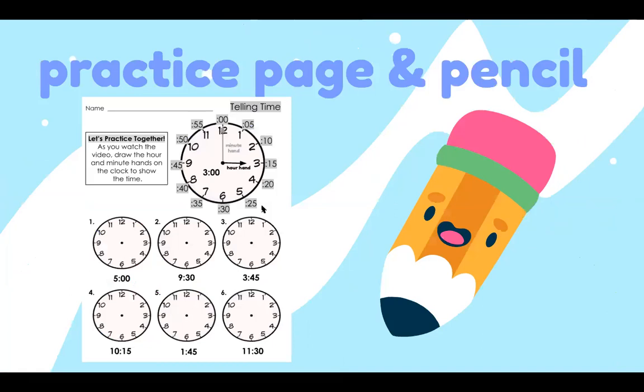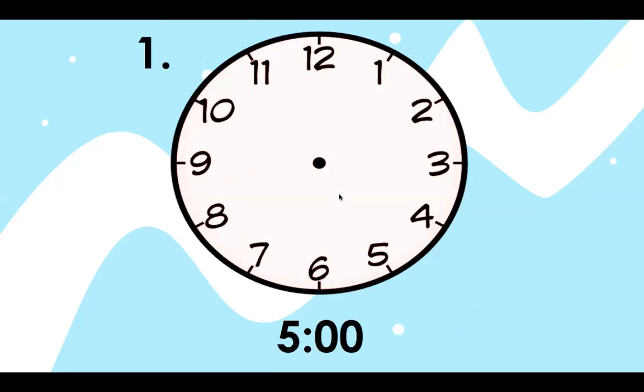Alrighty. Now I need you to get out your practice page and a pencil. When you look at this practice page, it says, let's practice together. As you watch the video, draw the hour and minute hands on the clock to show the time. So we will be looking at each clock and it has the time and you are going to draw the hour and the minute hands to show the time. And you're just going to use a pencil today. You can see here I have our example clock that has the minutes around the outside to help you. Let's get started.